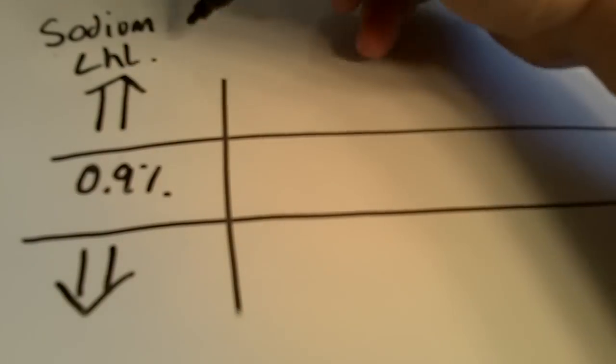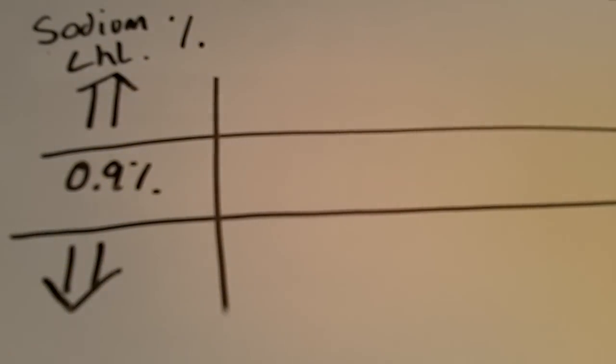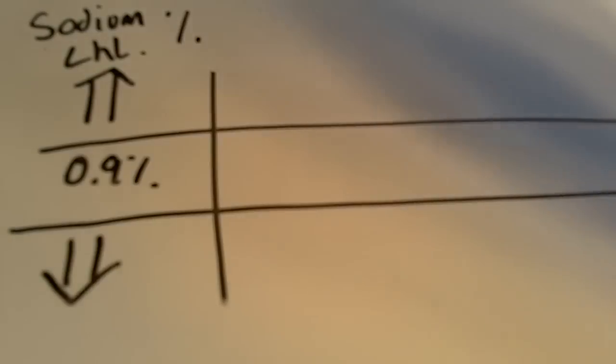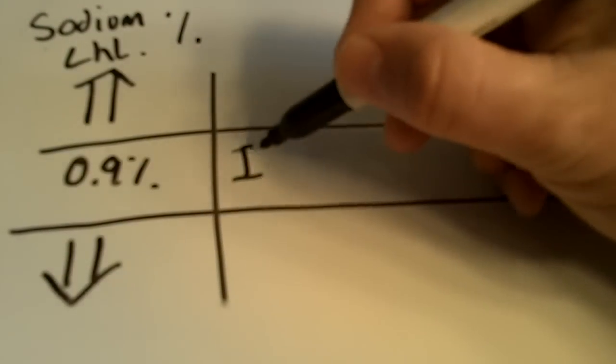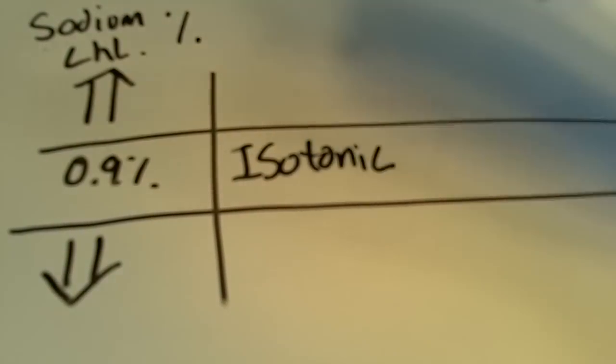So, I draw out this little grid, and over here in this column, this represents how much sodium chloride percentage in a solution is, and here in the middle I have 0.9%, and what that is, is that is an isotonic solution of sodium chloride.